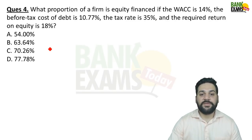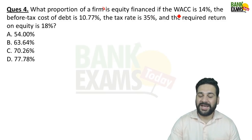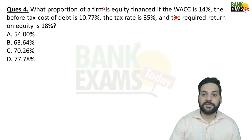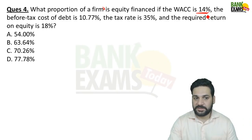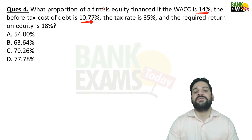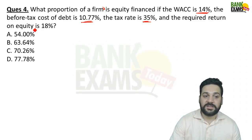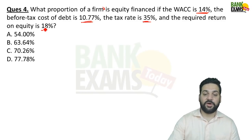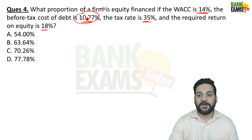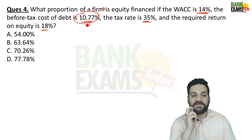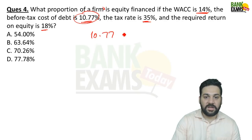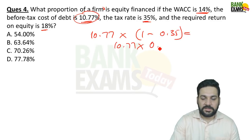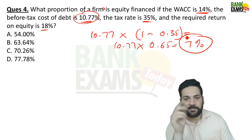Question 4: What proportion of a firm's capital is financed by equity if the weighted average cost of capital (WACC) is 14%, the before-tax cost of debt is 10.77%, the tax rate is 35%, and the required return on equity is 18%? First, calculate the after-tax cost of debt: 10.77% × (1 − 0.35) = approximately 7%.